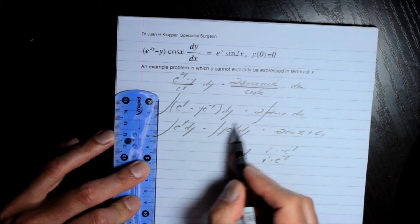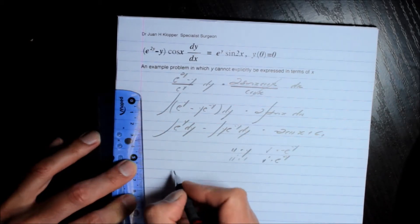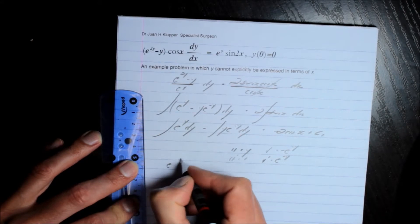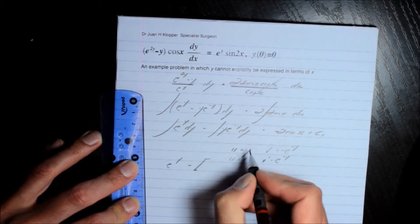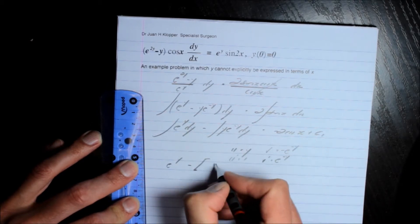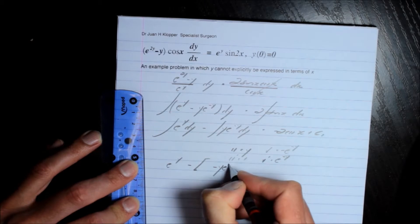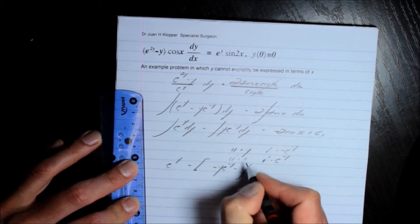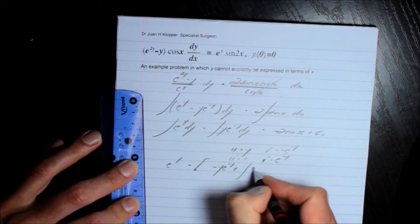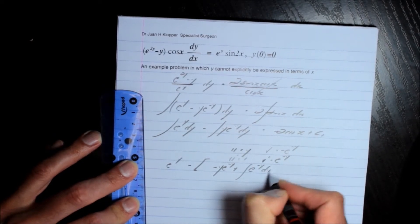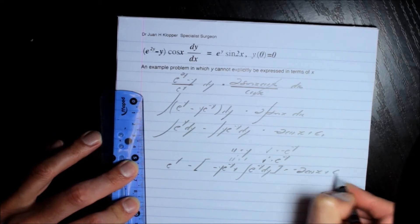And that is why I didn't choose this to be the u value. So here I'm going to be left with e^y minus, let us see, it is uv which is going to be -y e^(-y) minus the integral now of u' v. So that becomes a positive e^(-y) dy equals -2 times the cosine of x plus c1.